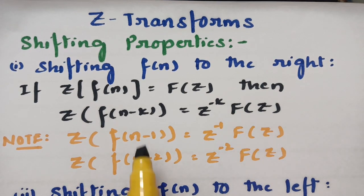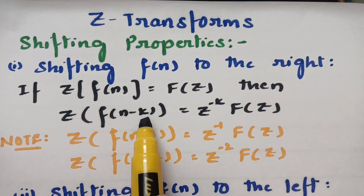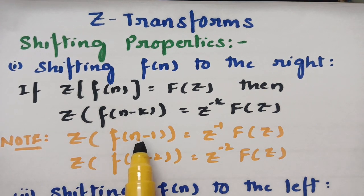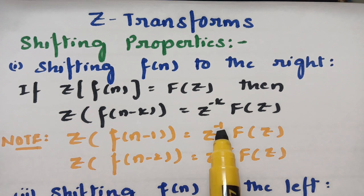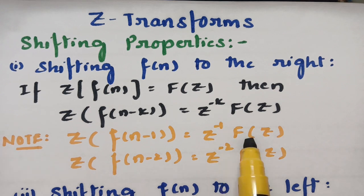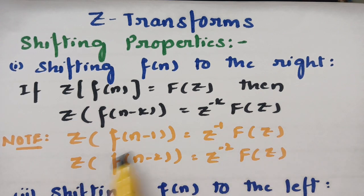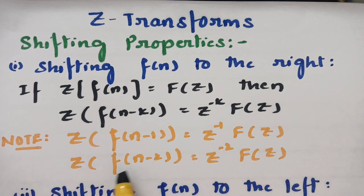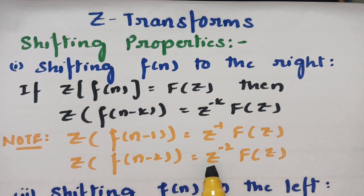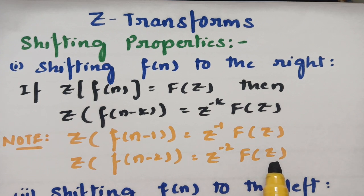If you set k equal to 1, then the Z transform of f(n minus 1) can be written as z to the power of minus 1 times F(z). If you set k equal to 2, then the Z transform of f(n minus 2) is equal to z to the power of minus 2 times F(z). This is about shifting to the right side.